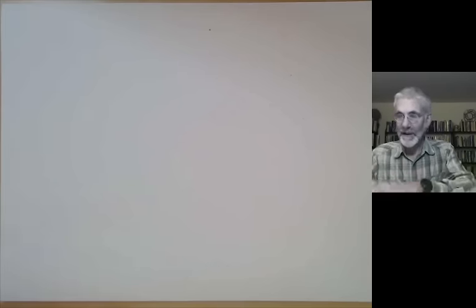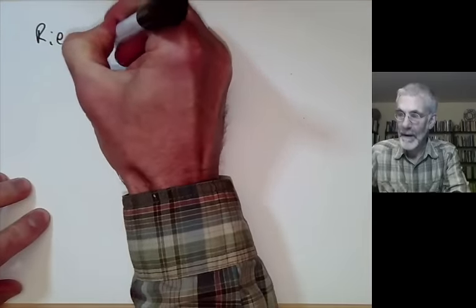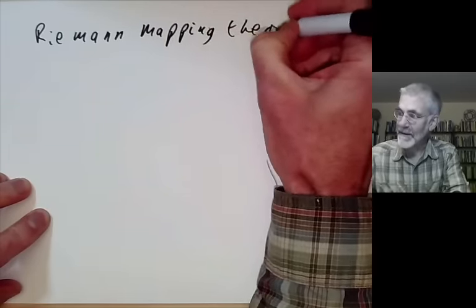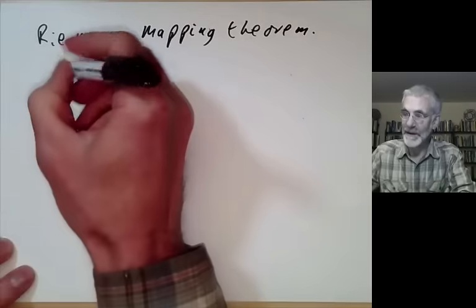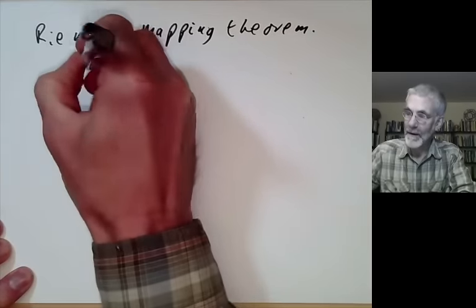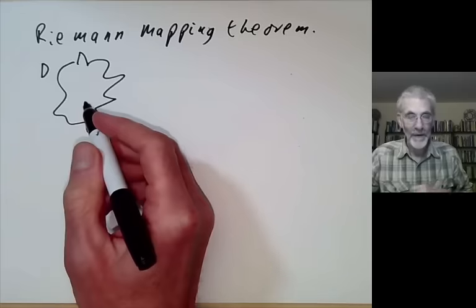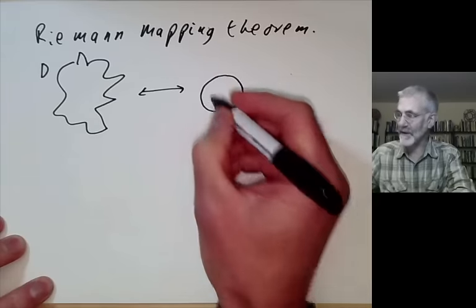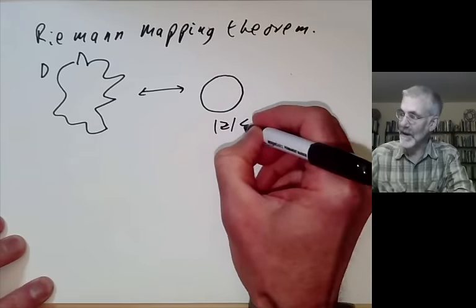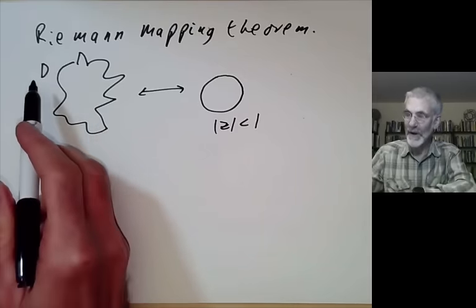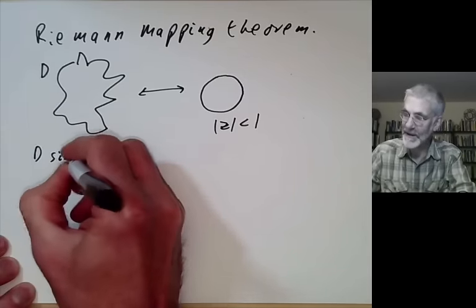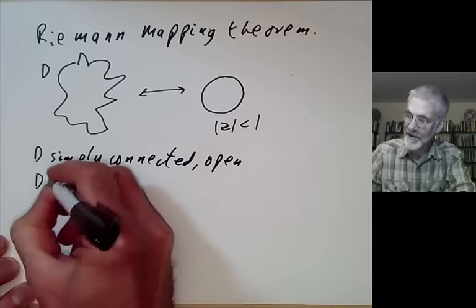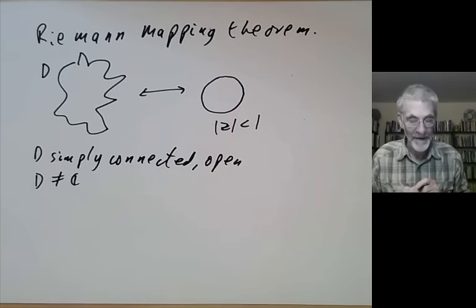This video is about the Riemann mapping theorem. I'm going to state the theorem and then sketch the proof. Suppose you take any complicated open subset D of the complex plane. The Riemann mapping theorem says that this is isomorphic to the open unit disk — just the complex numbers Z with |Z| < 1. The only conditions are that D should be simply connected and open, and that D should not be the whole complex plane.